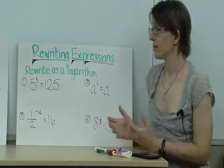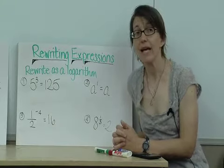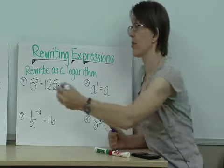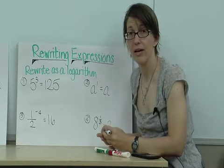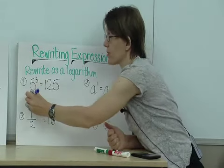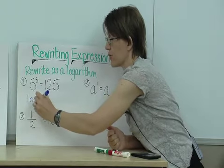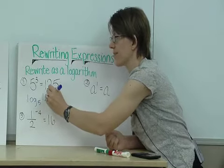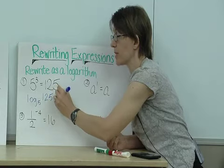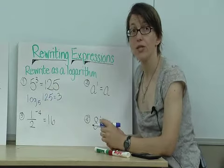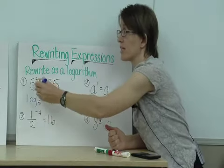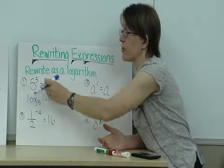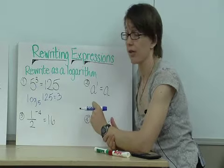And one of the best ways to practice this is to rewrite exponential equations as logarithmic expressions. So, in number 1, 5 to the third power equals 125. My base is 5, so I'm going to write log to the base 5. My final answer here was 125, and the exponent that I was raising 5 to is 3. So, you can see that the base of the logarithm and the base of the exponent are the same, and the exponent becomes the solution to the logarithm expression.